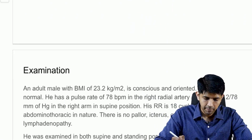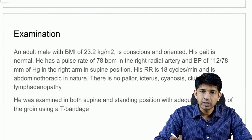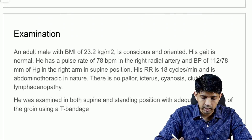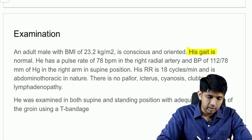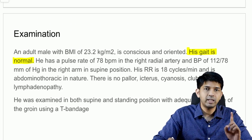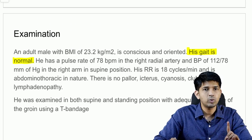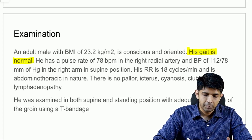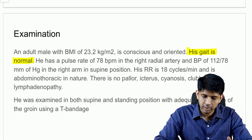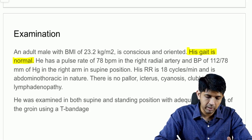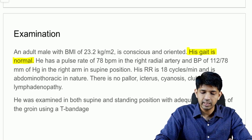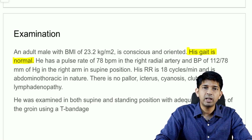An adult male with a BMI of 23.2 kg/m² who is conscious and oriented. His gait is normal — meaning he does not have equinus gait, so it has not reached an advanced stage. Pulse rate is 78 beats per minute in the right radial artery, blood pressure 110/78 mmHg in the right arm in supine position, and respiratory rate is 18 cycles per minute, abdomino-thoracic in nature.